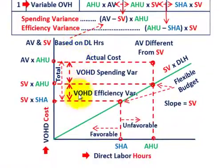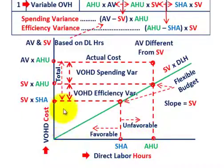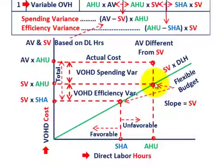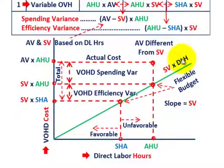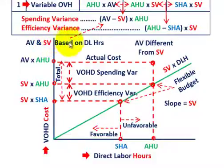Let's look at it in graph form. I've got a graph where direct labor hours runs across the x-axis, and variable overhead cost runs along the y-axis. Along with this graph, we have a green line representing the flexible budgeted amount. That's really taking your standard variable rate times some direct labor hours. Just to note, our actual and standard variable rates for variable overhead are based on direct labor hours.